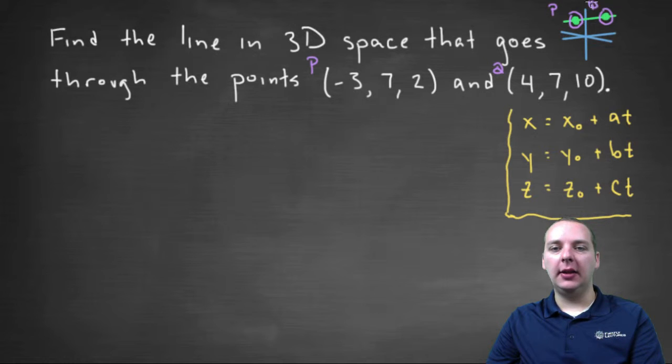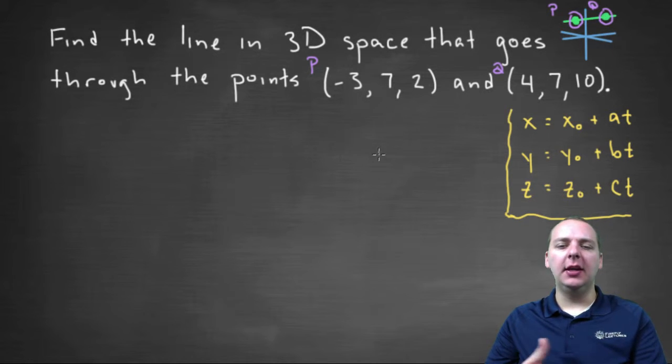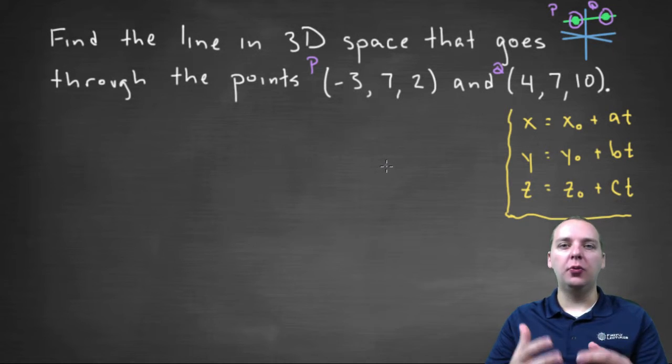So we want to find a line that goes between P and Q. Now if you think back to how you write a line in three dimensional space, we usually do this in what's called parametric form, where we write the X and the Y and the Z independently of one another in terms of a parameter T.